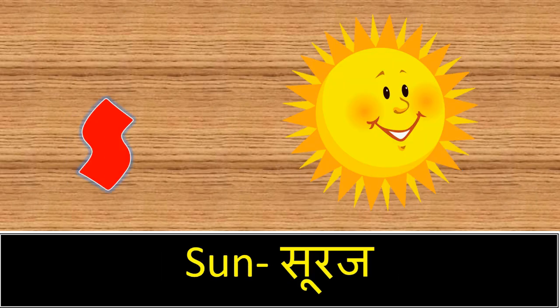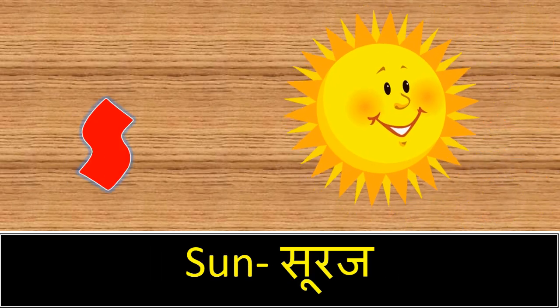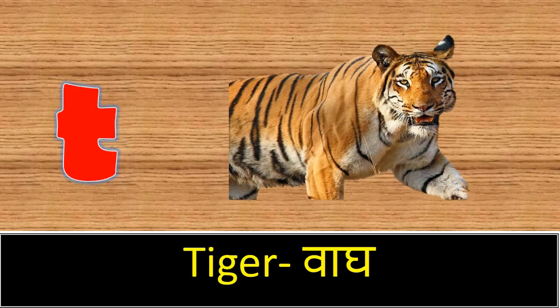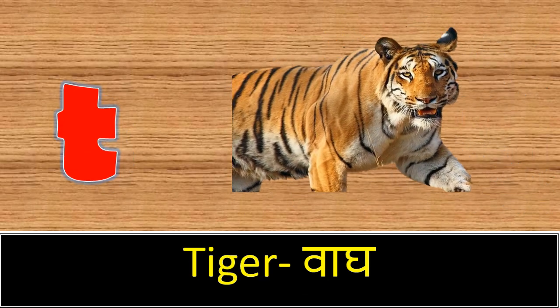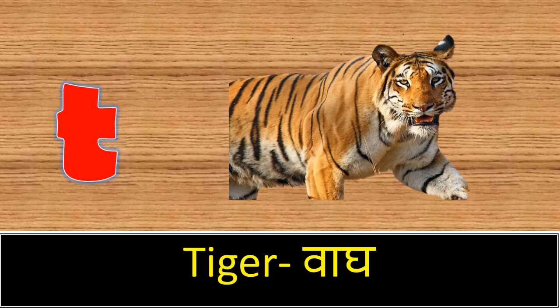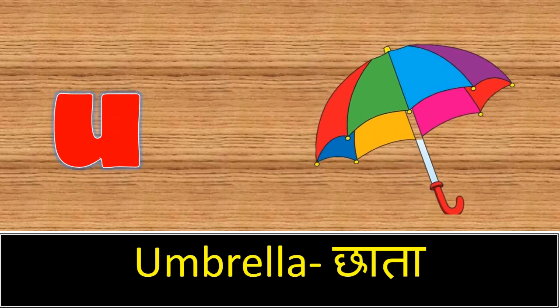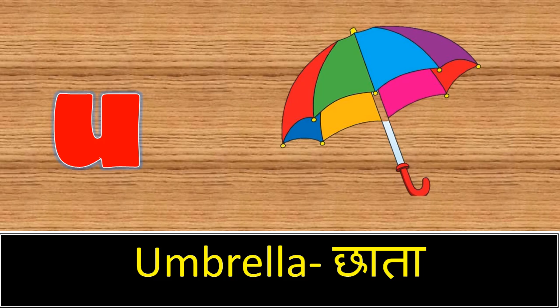S. S for sun. Sun means suraj. T. T for tiger. Tiger means vaag. U. U for umbrella. Umbrella means chata.